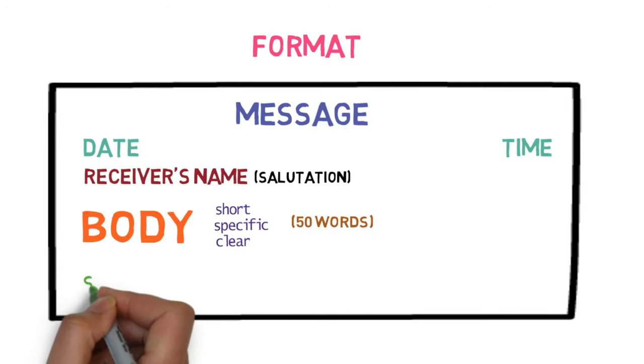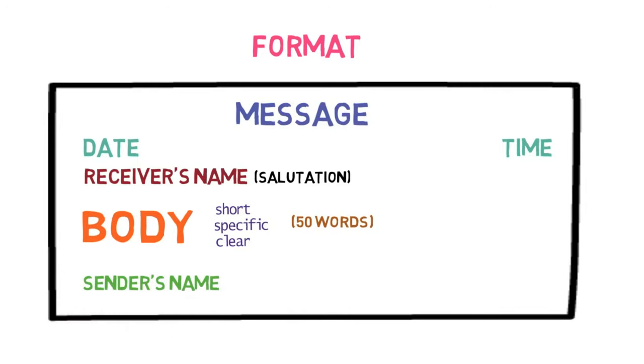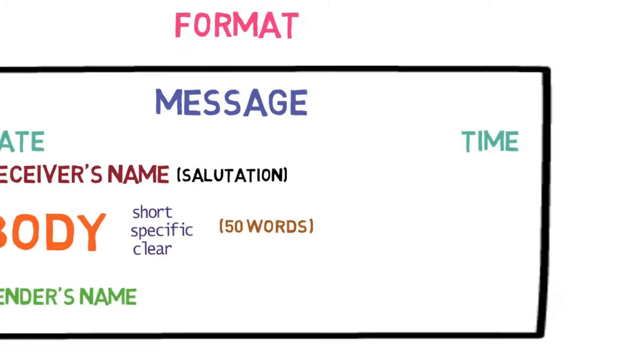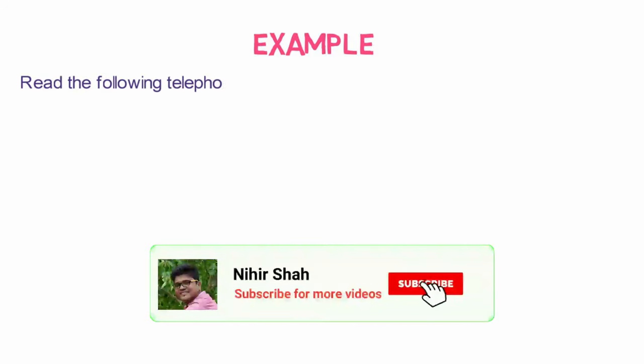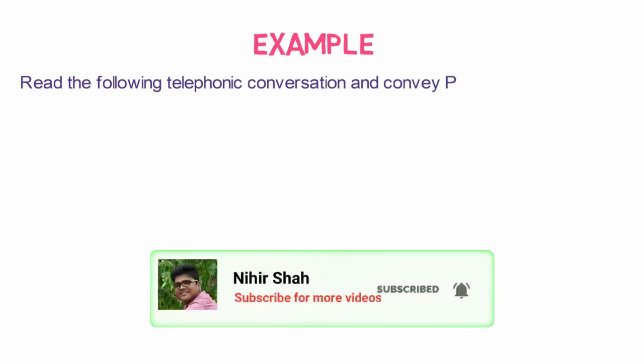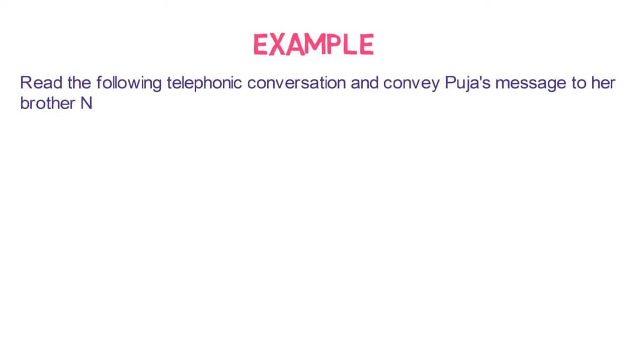And Step 5. Finally, write the name of the person who has written the message. Let's understand this format with an example. Read the following telephonic conversation and convey Puja's message to her brother Nilesh on her behalf. The conversation is between Puja and Divya who is Nilesh's colleague at work.